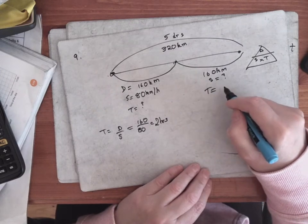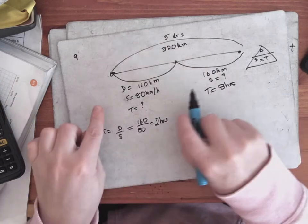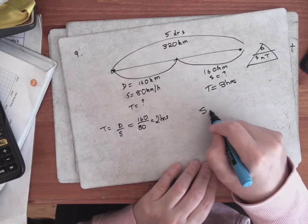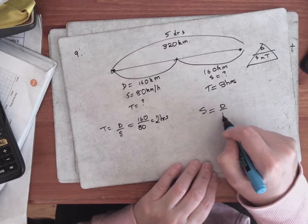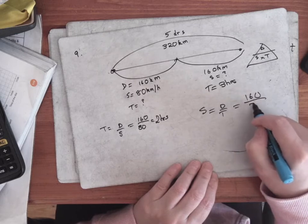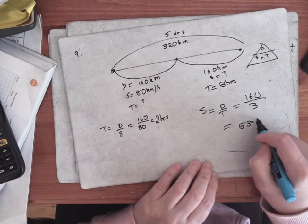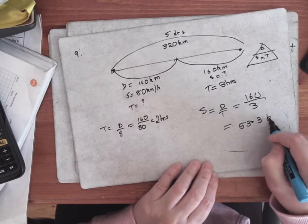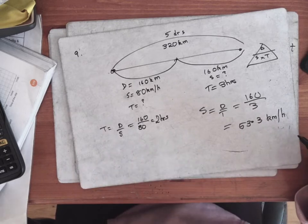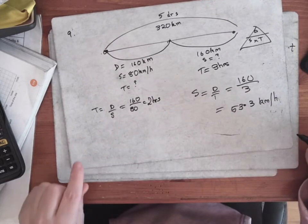If the whole journey took five hours and the first part took two hours, the second part takes three hours. For the second part, speed equals distance over time, which is 160 kilometers over 3 hours. Into the calculator that gives 53.3 kilometers per hour, or 53 and a third. That's number nine.